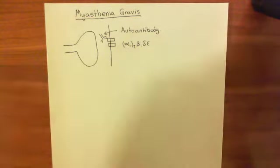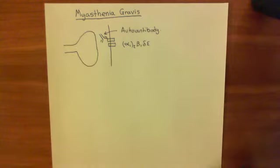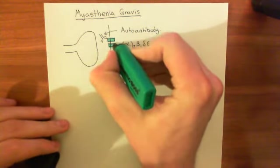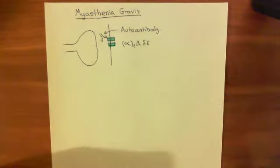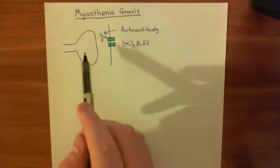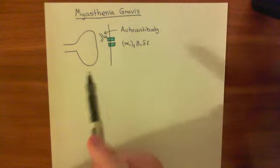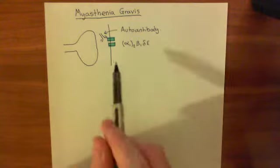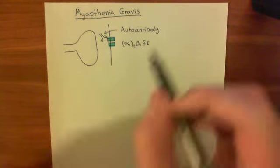Okay, now what is the result of binding these antibodies to the extracellular domain of these nicotinic acetylcholine receptors? Well, the result is that when this presynaptic neuron releases acetylcholine into the synaptic cleft, is the acetylcholine going to be able to bind to the nicotinic acetylcholine receptor anymore? No, is the answer. It can't bind because the antibody is in the way.